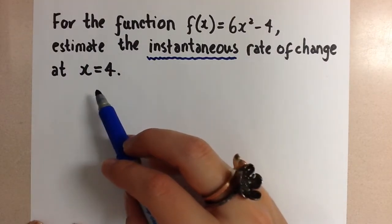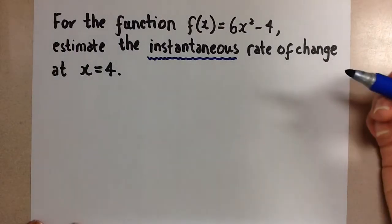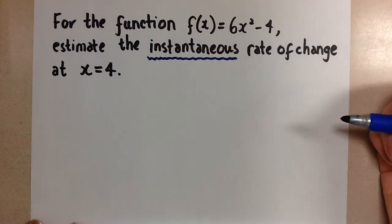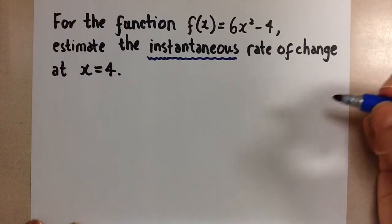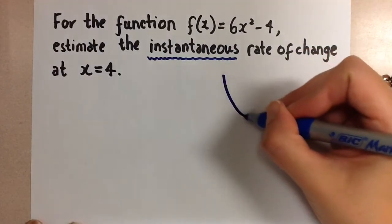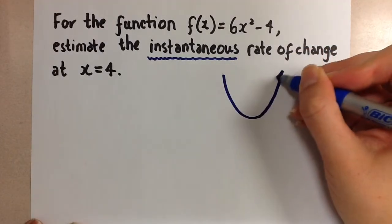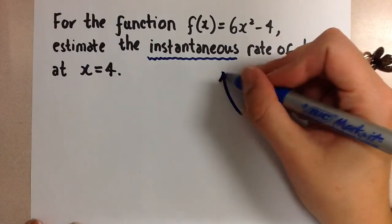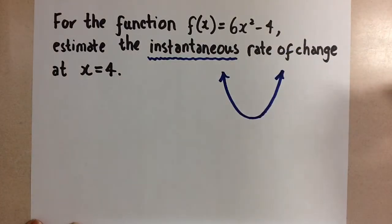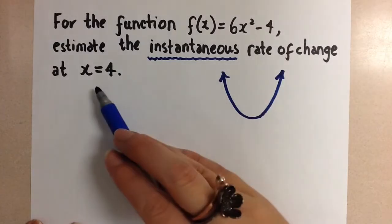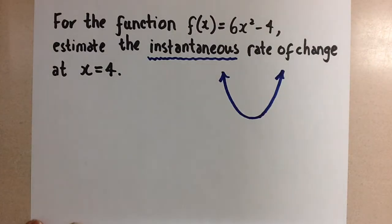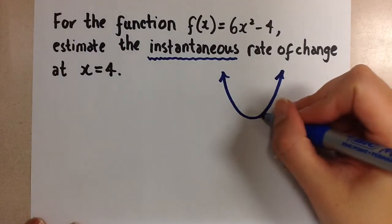So for an average rate of change, if you remember, we look at the slope of the secant line connecting the two points on either side of the interval. For an instantaneous rate of change, we essentially want to narrow in that interval and make it so small near the point where x equals 4 so that we end up with a tangent line at that point instead of a secant line.